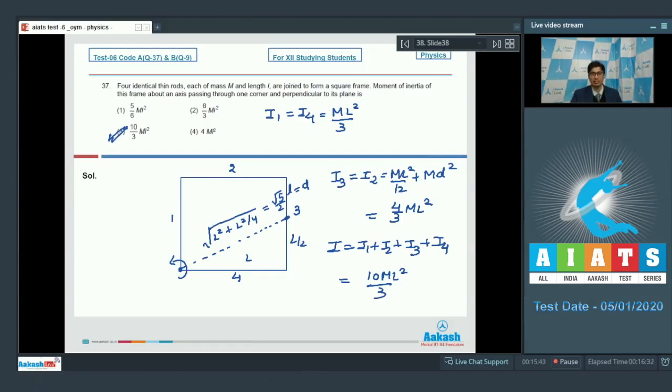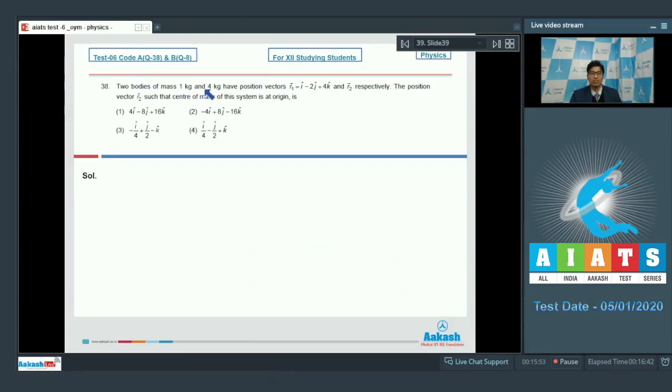Now let us proceed to question number 38. Question number 38 says, two bodies of mass 1 kg and 4 kg have position vectors, r1 is equal to i cap minus 2 j cap plus 4 k cap and r2 respectively. The position vector r2 says that center of mass of the system is at origin is.